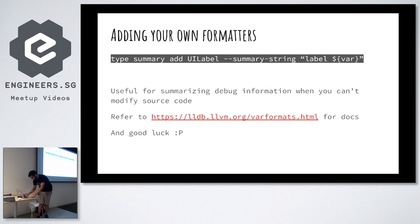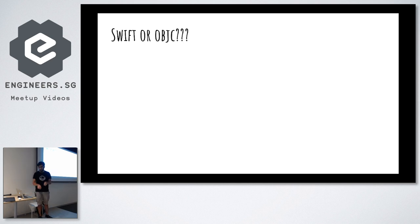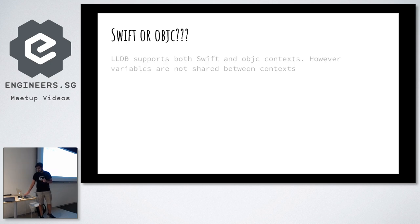One problematic thing we often face when debugging with LLDB is: you are evaluating Swift code, you pause the debugger, you type something in Swift, and then it gives you some expression error saying this thing doesn't compile. This is because LLDB supports both Swift and Objective-C contexts — whatever the current context is, it will use that context to evaluate the expression.